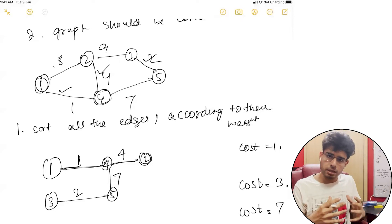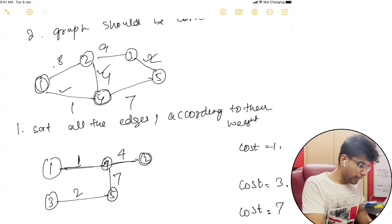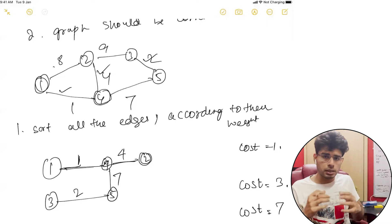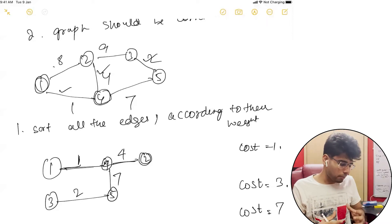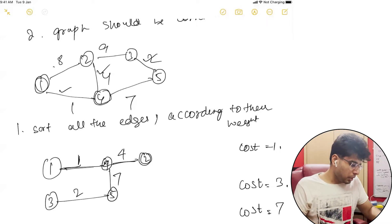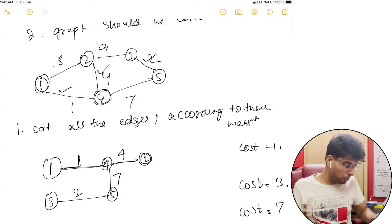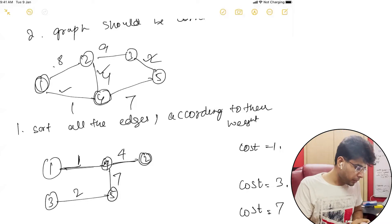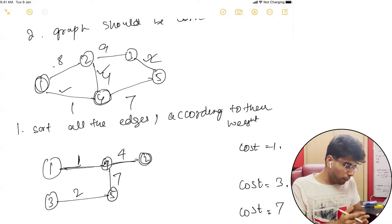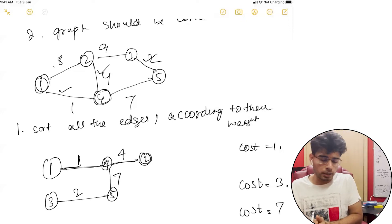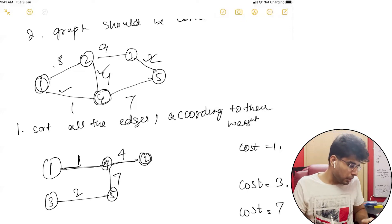We ensure that we will have only one connected component at the end because the graph is connected. When we took 1 and 4, they were not in the same connected component, so we included that in the tree. Then 3 and 5 — included because they were not in the same component. We also took 2 and 4, and 4 and 5, because they were also not in the same connected component.